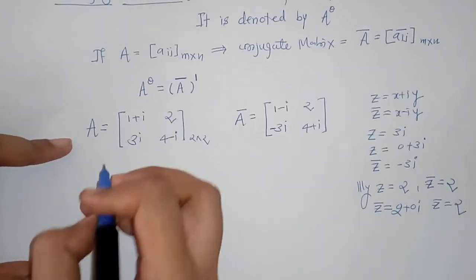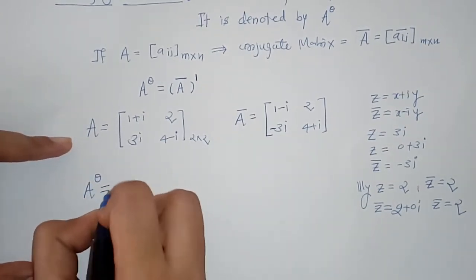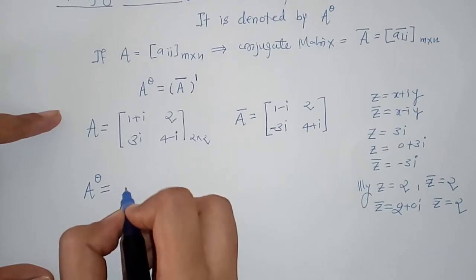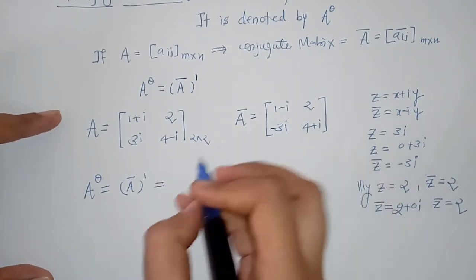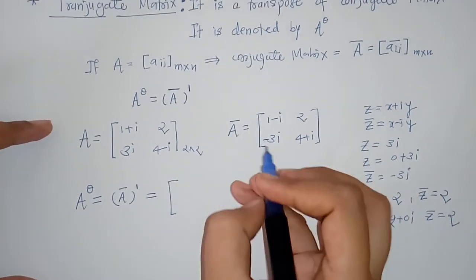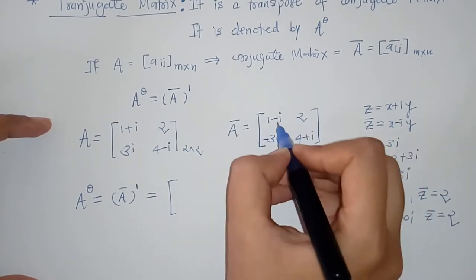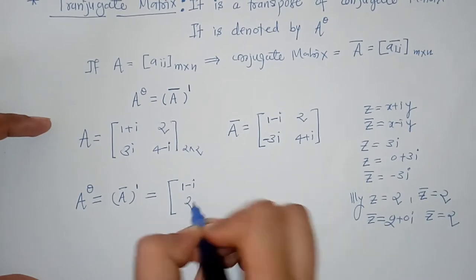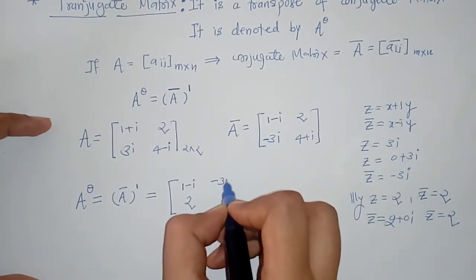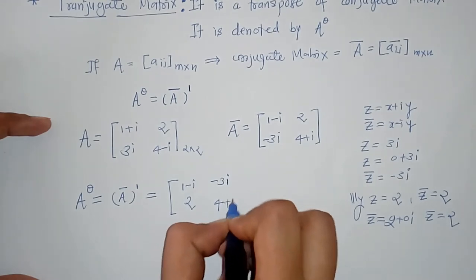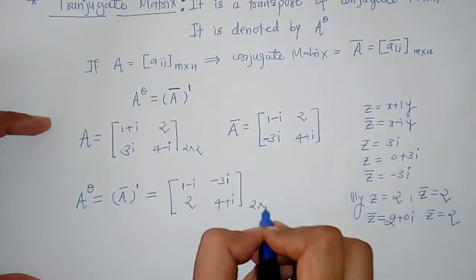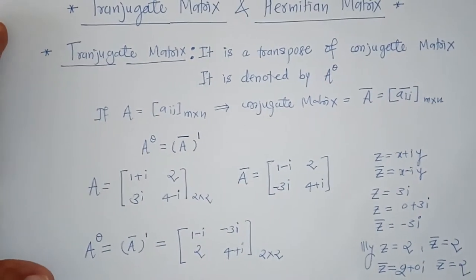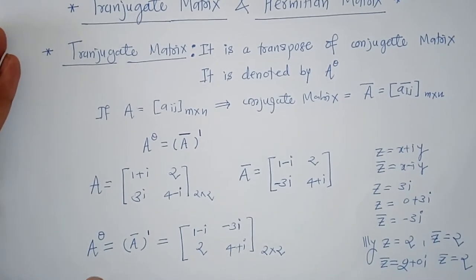Now we have to find A raised to theta, that means the transjugate matrix. So we have to take the transpose of the conjugate matrix. To take the transpose, we write the first row in the first column and the second row in the second column. So we get the transjugate matrix, which is the transpose of the conjugate matrix, of order 2×2.